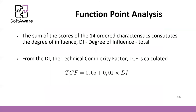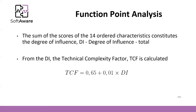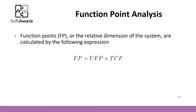Then we calculate the technical complexity factor, which is done by this formula: 0.65 plus 0.01 times the degree of influence. The degree of influence is the sum of the scores of the 15 system characteristics we analyzed. So we rate each item between 0 and 15, sum all points into the degree of influence, and then calculate the technical complexity factor.